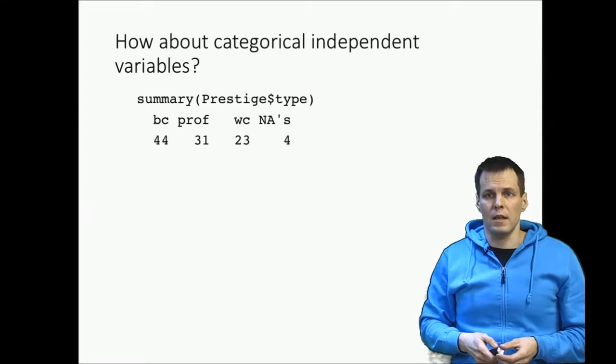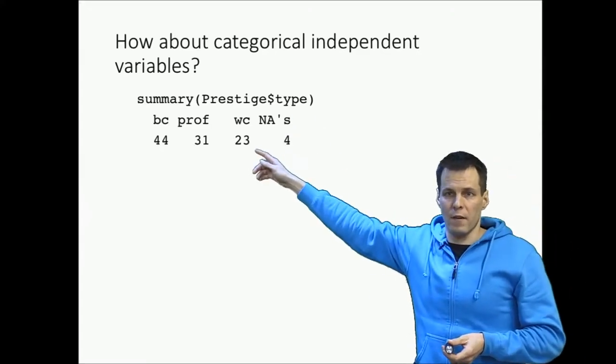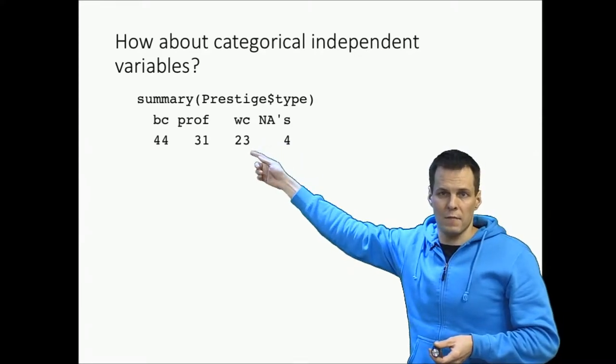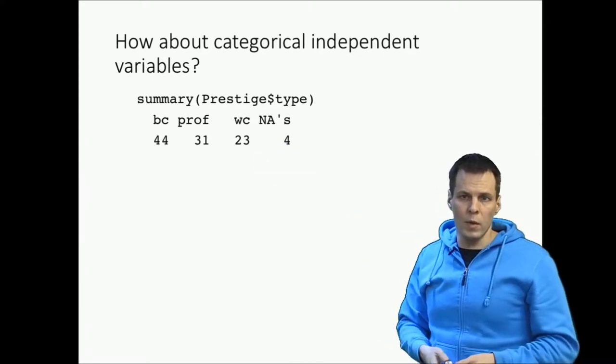It doesn't make sense because we can't say there is a magnitude of difference between these values and we can't say there's an order. So how do we deal with that?